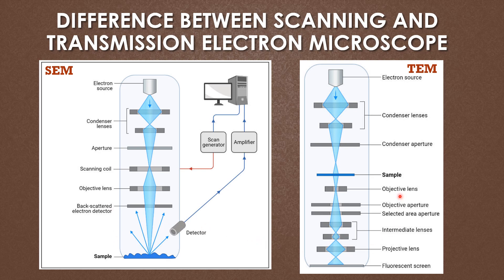In the SEM the objective lens is present below the sample, but in the TEM the objective lens is present above the sample. The electron source in the TEM produces an electromagnetic beam. In the SEM, two types of beams are produced: the primary electron beam, and after striking the sample, a secondary electron beam. In the TEM, a single electron beam is produced. Also, the TEM has a fluorescent screen, but the SEM does not. The SEM contains detectors and amplifiers, while the TEM does not.